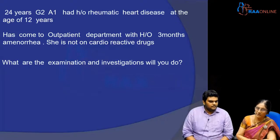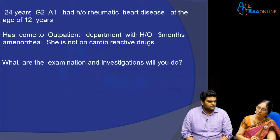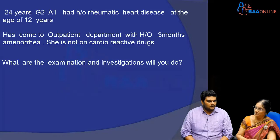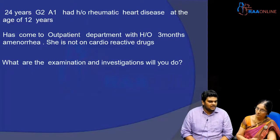Regarding infective endocarditis — she is not having any fever but she is anemic. So how do you clinically distinguish cardiac disease from murmur due to anemia? We would auscultate the patient, and for rheumatic heart disease the most common lesion is mitral stenosis. So we can check if the patient has a mid-diastolic murmur in the mitral area.